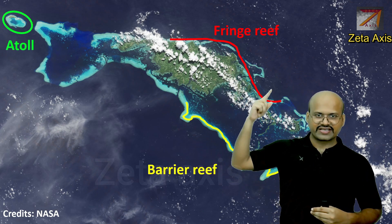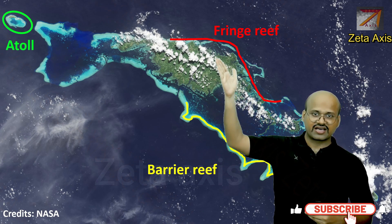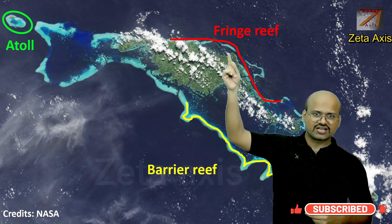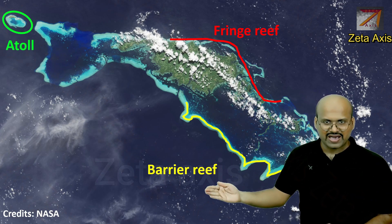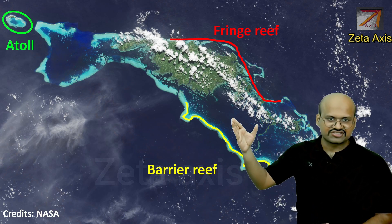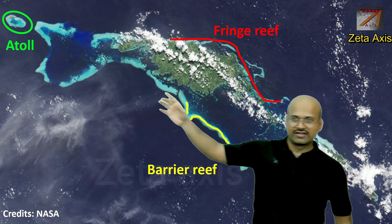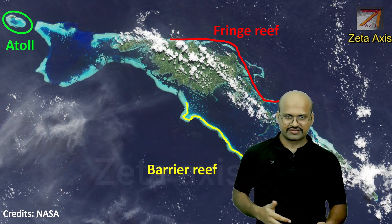Here is an image of an island where we can see all three types of reef together. In one region we can see fringe reefs, very close to the coastline and not separated by a deep lagoon. The barrier reefs are clearly visible much farther from the coastline, separated by a very large lagoon. And lastly, we can see an atoll. So all three reef types can co-exist.